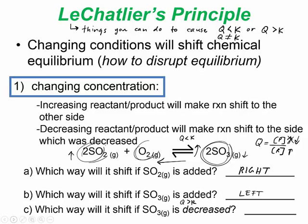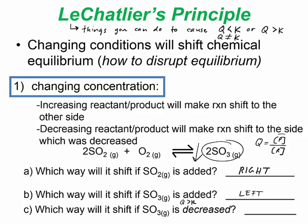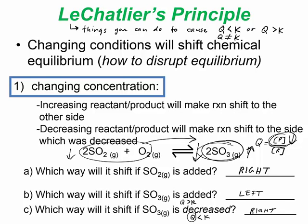Which way will it shift if SO3 is decreased? If the product amount goes down, Q becomes less than K because the product side has become smaller. So the reaction shifts right to create more SO3 to replenish what was removed, raising Q back up until Q equals K.